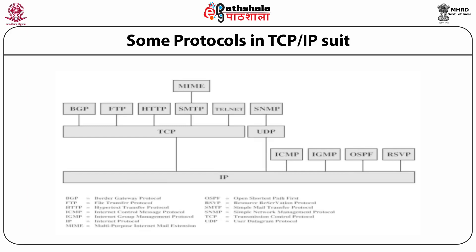That is why we need not even type 'http://' in the browser — just typing www.google.com will work, because the browser takes HTTP as the default protocol. BGP is Border Gateway Protocol. ICMP is Internet Control Message Protocol — it gives error messages and information messages on the internet.